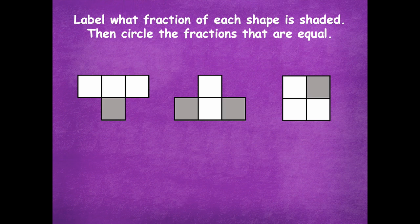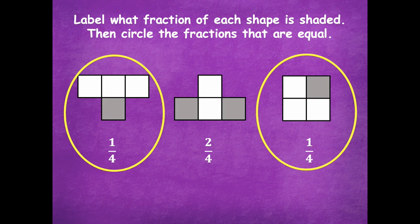On your dry erase board, instead of drawing just write the fractions in order. For example, looking at this first one, you would write one fourth, then two fourths, then one fourth, and circle the ones that are the same. One fourth is equivalent to one fourth — even though the shapes look different, they're equivalent. Just write the fraction and circle the two that are equivalent.